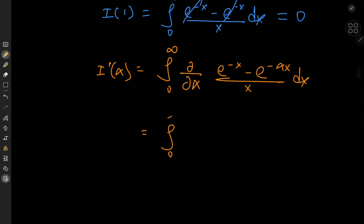So differentiating partially, I have this 1 over x term. The e to the negative x term is independent of the alpha parameter, so that contributes 0. Then minus e to the negative alpha x — and by the chain rule, I have this constant multiple of negative x there.